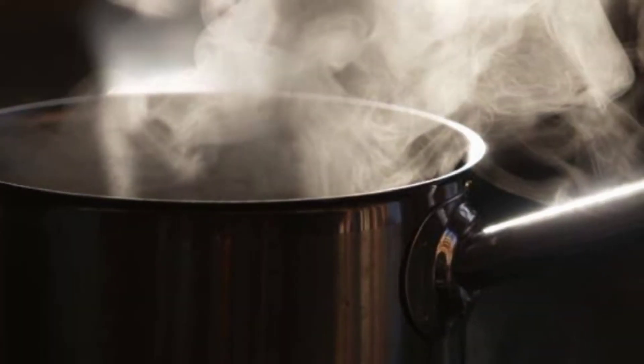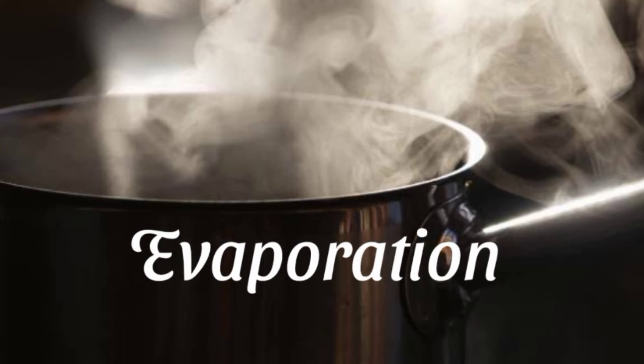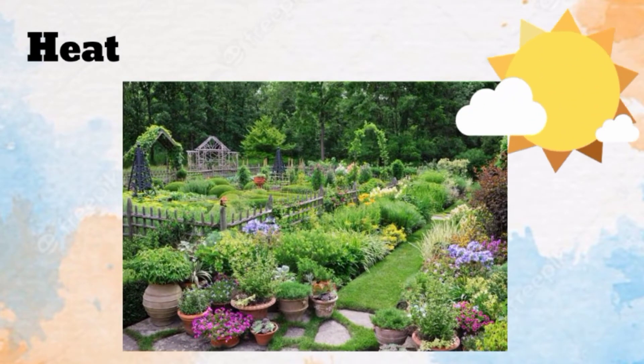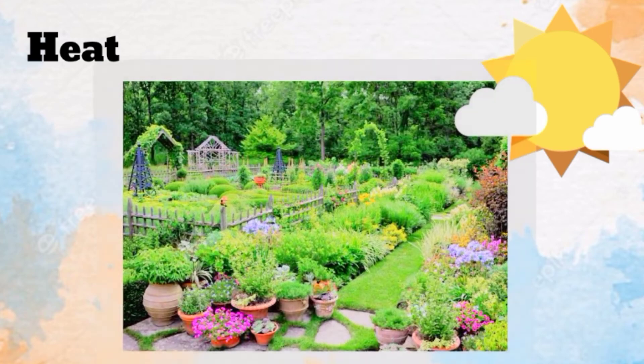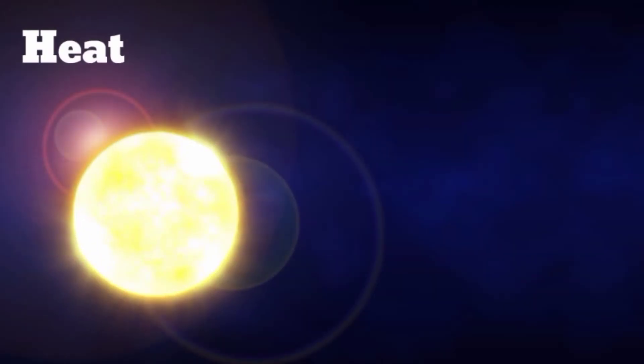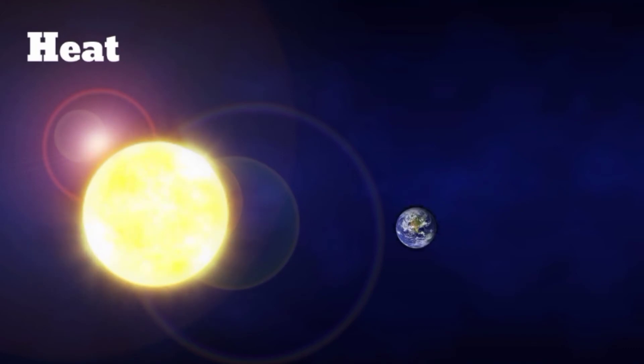In this lesson, we are going to learn about the evaporation process and its examples. But before we discuss what evaporation is, let us first talk about heat. Heat is an important component of our environment as it makes green things live and grow abundantly. The presence of the Sun's heat serves as the main source of energy in our planet.